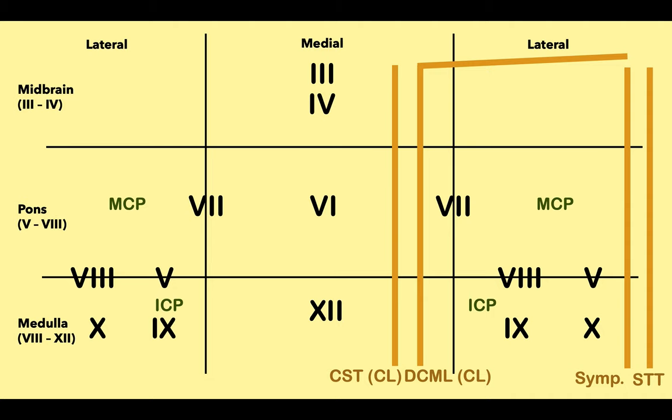So there you have five different syndromes. If you can draw this diagram — knowing your cranial nerves, which ones are medial vs. lateral, the circulation, and where the tracts are — you are good to go. You'll be able to identify which artery is affected, which structures are affected, and piece everything together. If you have any questions, write a note below. I'll see you later.